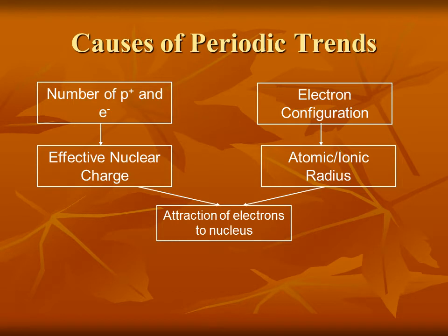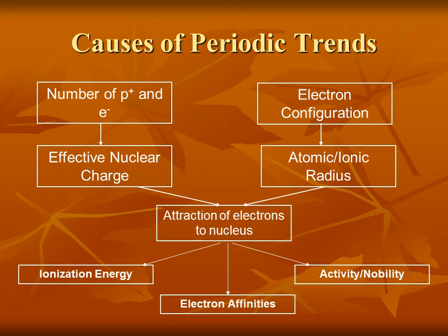Based on effective nuclear charge and atomic radius, you can make predictions of all sorts of periodic properties such as ionization energies, electron affinities, and the activity or nobility of an element — nobility being the opposite of activity. In other words, how likely is an element to participate in a chemical reaction?